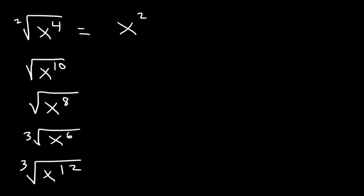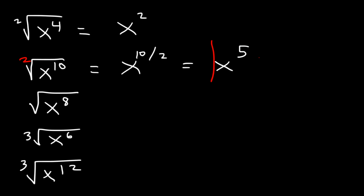When you square something, it's always going to be positive. The square root of x to the tenth: that's 10 divided by 2, which is 5. Notice that we have an even index number and an odd exponent, so we need to enclose it using absolute value. For the next one, 8 divided by 2 is 4 — because the result is an even exponent, we don't need the absolute value notation.